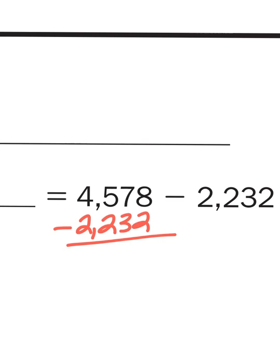Now as you can see, all the digits in the bottom number are smaller than the digits in the top number. So this subtraction problem will not require regrouping. So let's just go ahead and solve. 8 take away 2 is 6, 7 take away 3 is 4, 5 minus 2 is 3, and 4 minus 2 is 2. So my difference between 4,578 and 2,232 is 2,346.